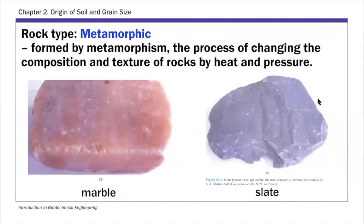The third basic type is metamorphic. Metamorphic rock is basically formed by the process of changing the composition and texture of rocks through heat and pressure. Two common examples are marble and slate.